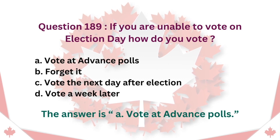Question 189: If you are unable to vote on election day, how do you vote? A. Vote at advance polls. B. Forget it. C. Vote the next day after election. D. Vote a week later. The answer is A. Vote at advance polls.